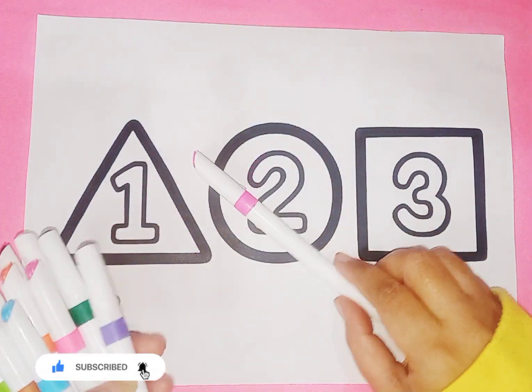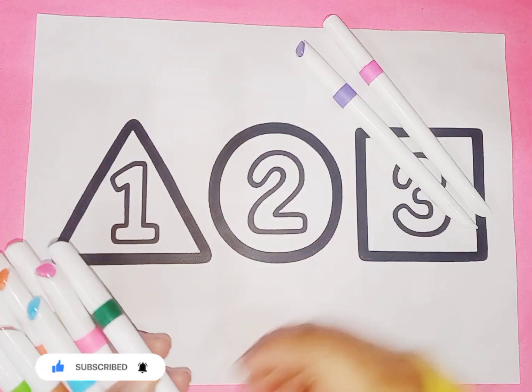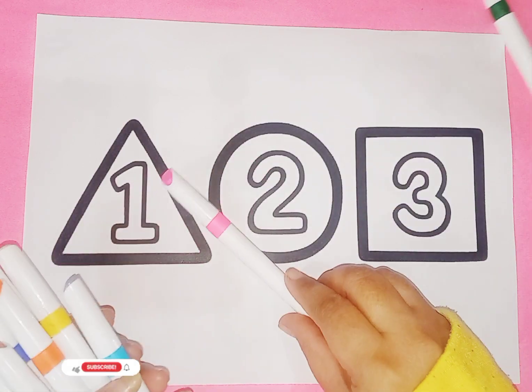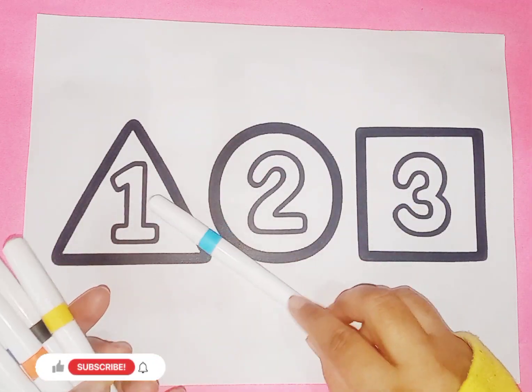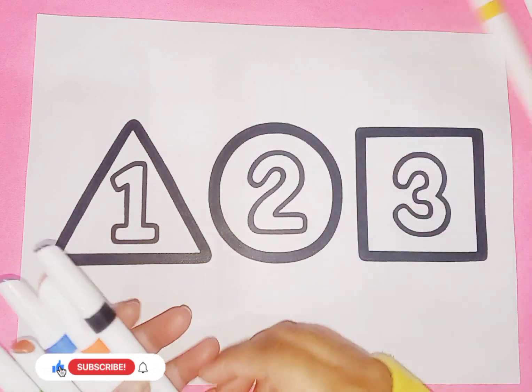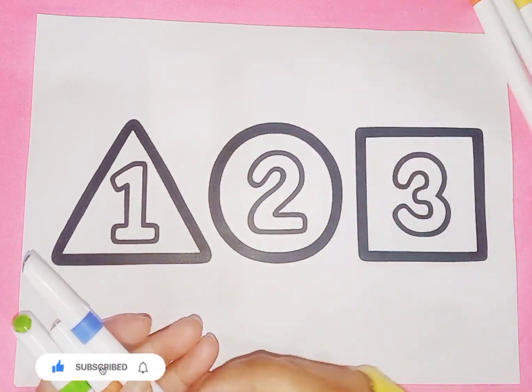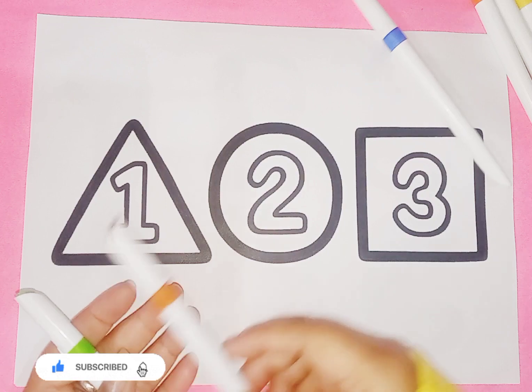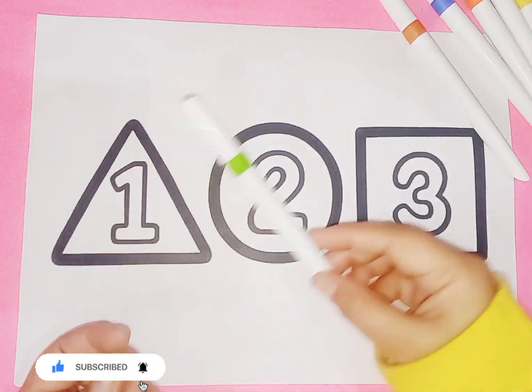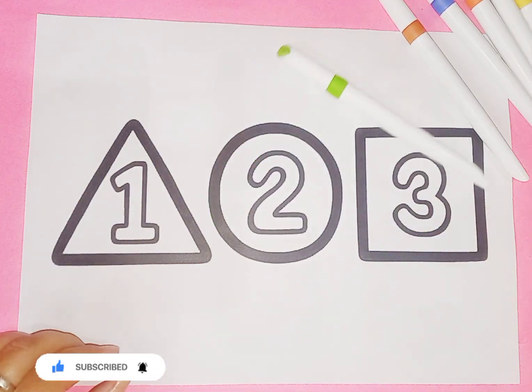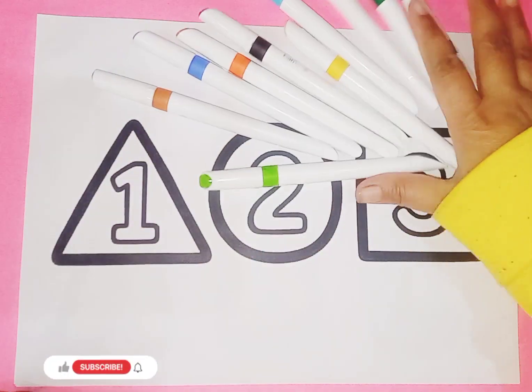This is pink color, purple color, green color, light pink color, sky blue color, yellow color, black color, orange color, blue color, brown color, light green color. These are colors.